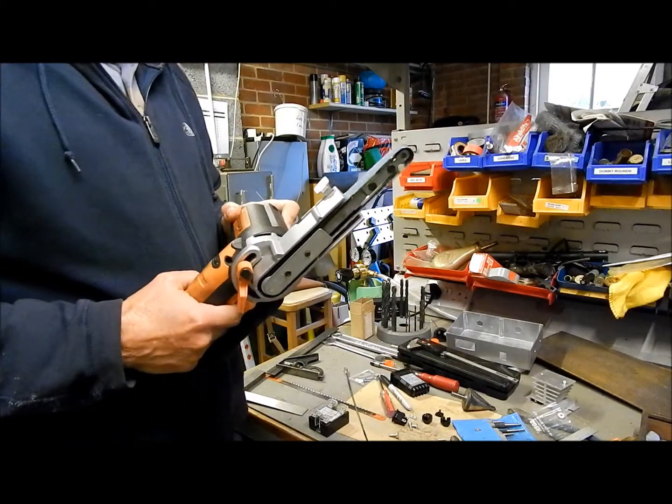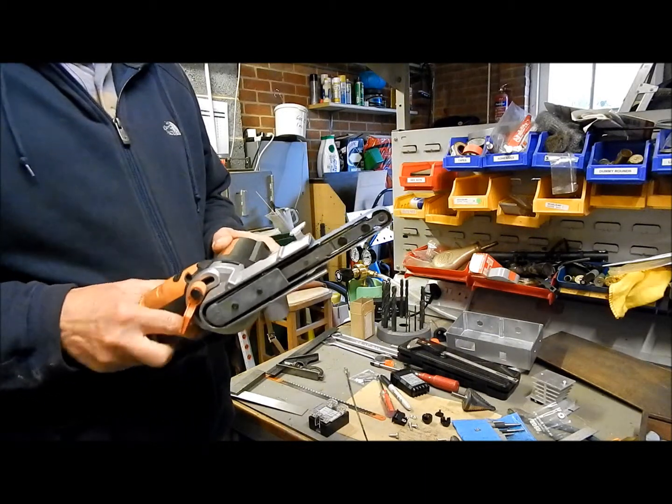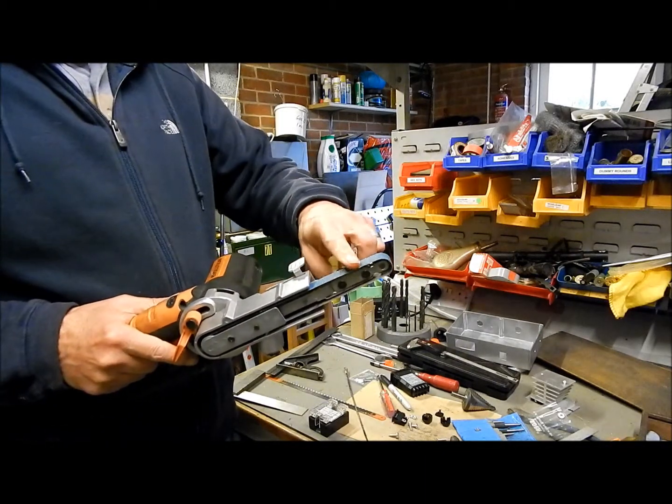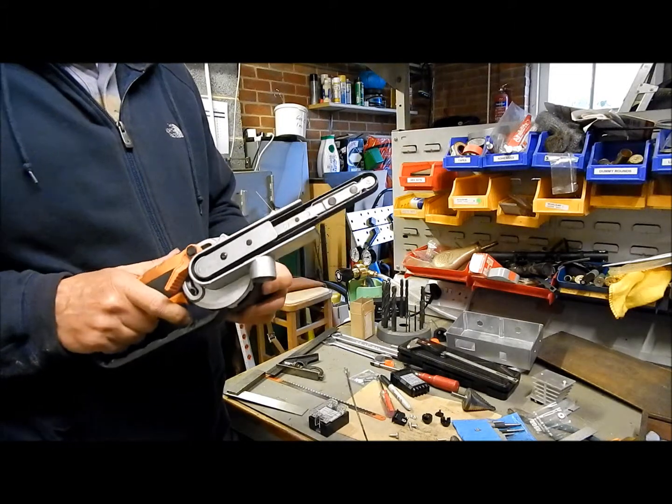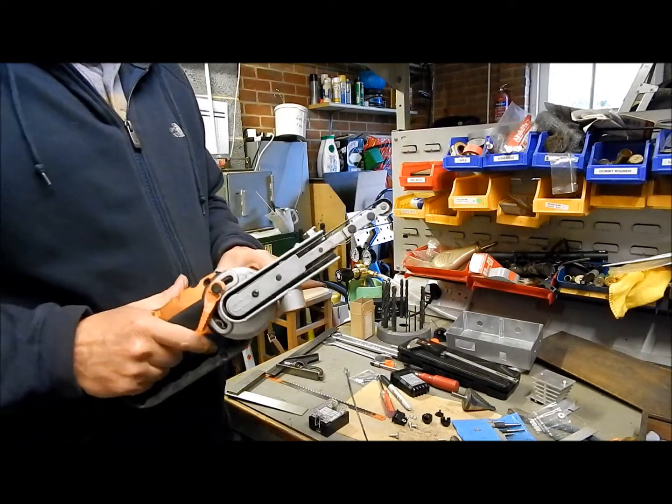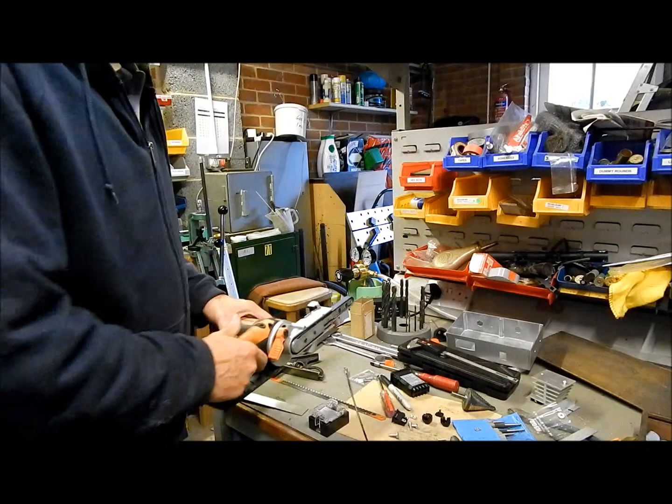This is called a power file. It uses thin abrasive belts. It's very quick to use. Sometimes a little bit too quick and you get carried away with it.